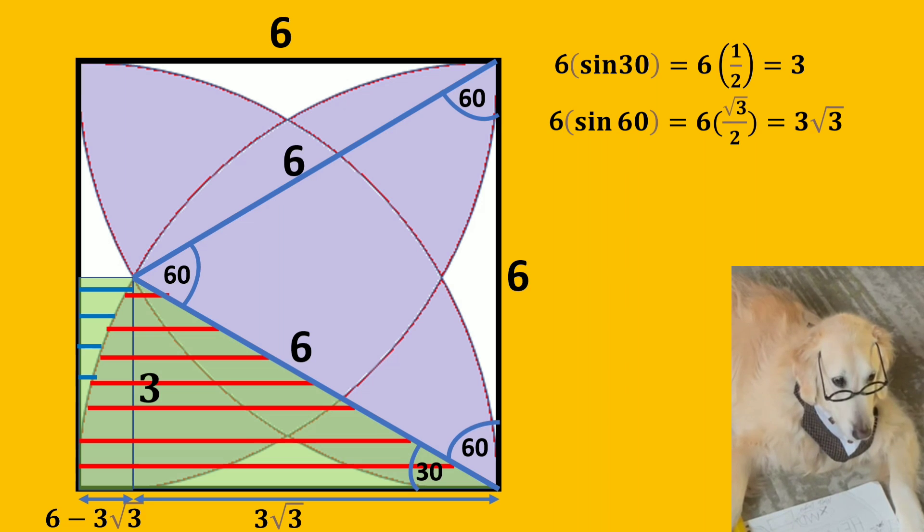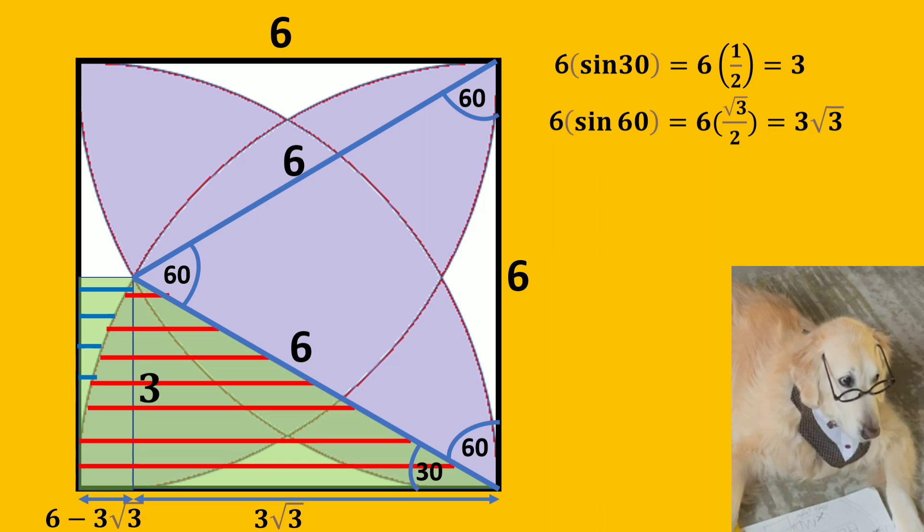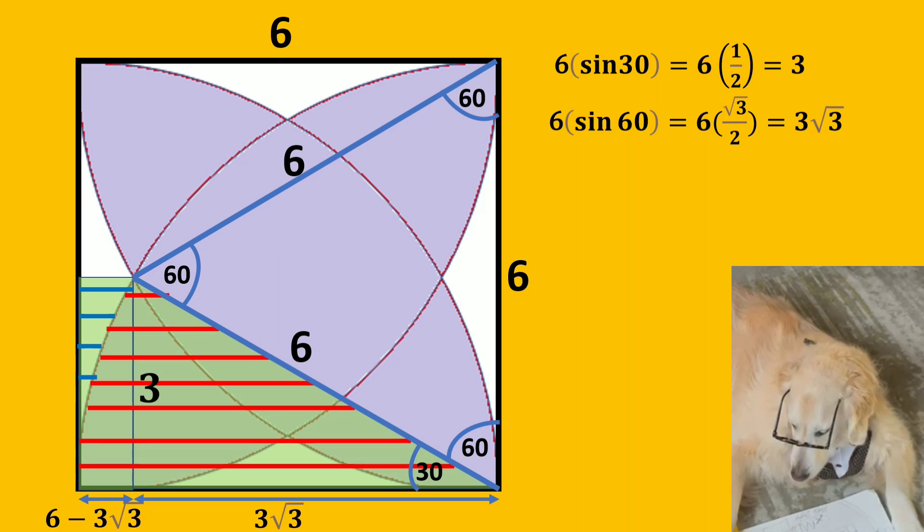So we can find the trapezoid height which is 3, and we can also find two sectors of the base which are 6 minus 3 times square root of 3 and 3 times square root of 3.